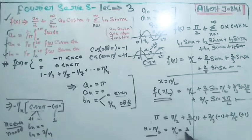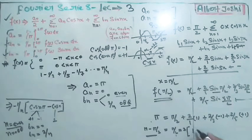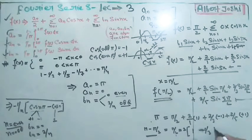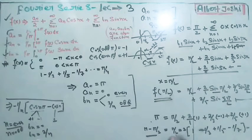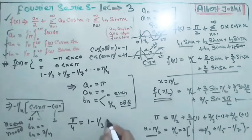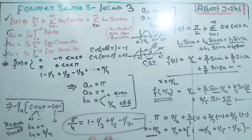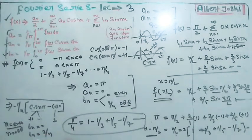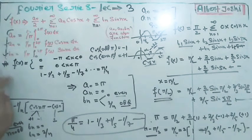Dividing both sides by 2, we obtain the famous Leibniz formula: π/4 = 1 − 1/3 + 1/5 − 1/7 + ⋯. This result is commonly asked in previous year exam questions. Pause the video and try solving it yourself to get a clear understanding. A different example question will be explained next to further clarify the concept.